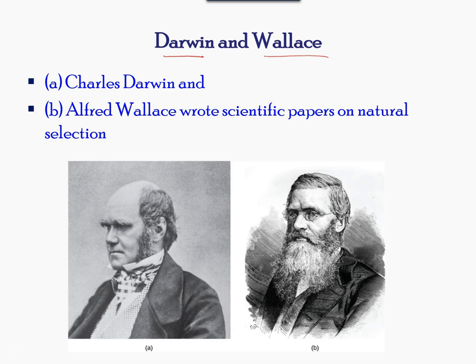Darwin had traveled to the Amazon rainforest. During his voyage, he stopped at several island chains. On these islands, he observed species of organisms that were clearly similar but yet had distinct differences.